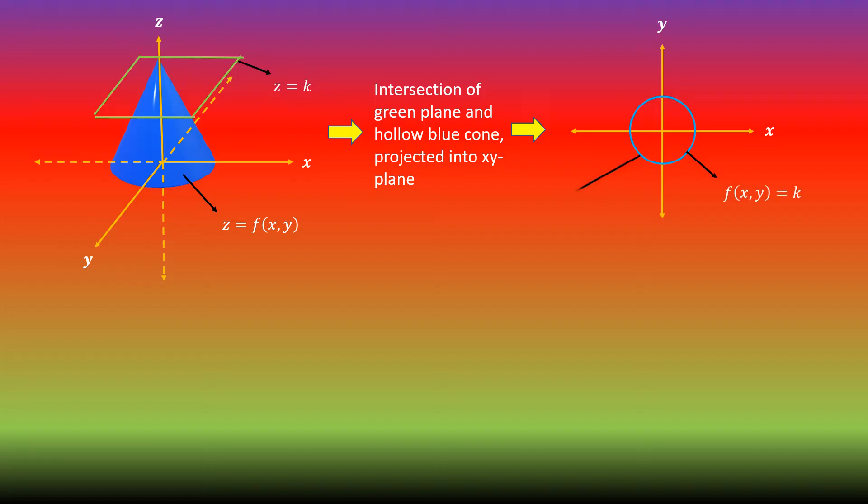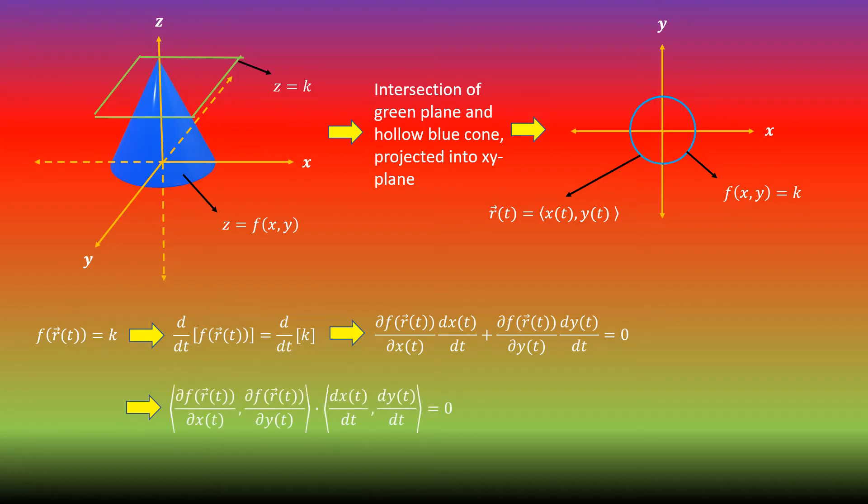In most cases, this intersection would form a line, so we can parametrize it by a single variable, which we will call t. Therefore, we can also describe this curve with a position vector we will call r, which is a function of t. If we then take the derivative of both sides with respect to t, then we can evaluate the left side using the multivariable chain rule, and the right side is just equal to zero. Then we just have to recognize that the left side is just the dot product of the gradient of f of x, y with the derivative with respect to t of the position vector describing the level curve.